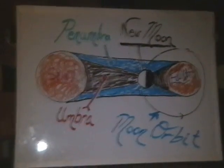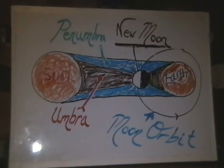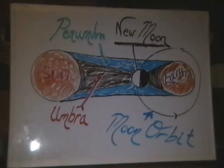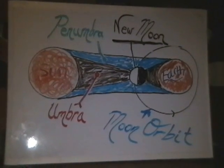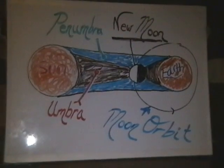This is a solar eclipse. This occurs when the Moon blocks the Sun's light from Earth. This can only happen during the New Moon stage.